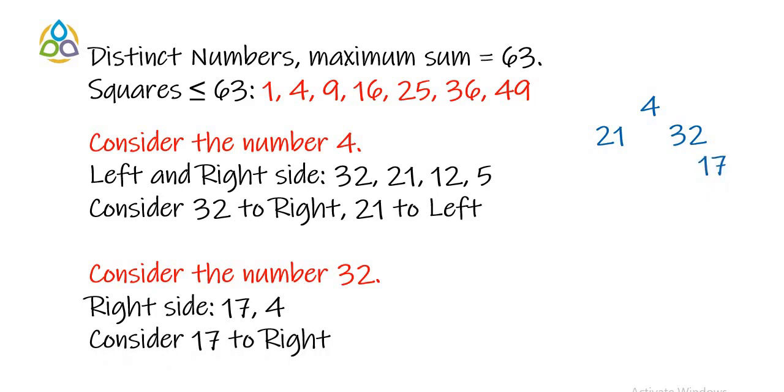So, if we take 17, then the arrangement looks like this and 4 is already taken. So, we cannot take 4 as a number to the right of 17. We have to proceed by trial and error method in this way. As a result, we have the circle which looks like this one.